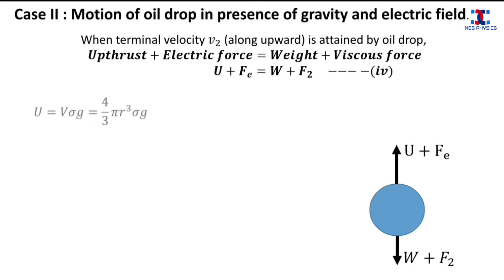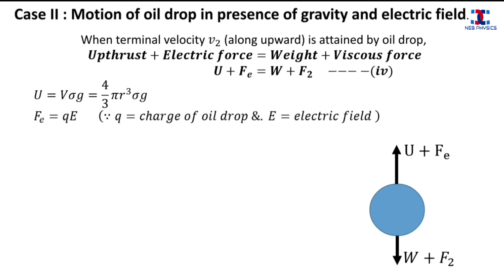We already know that the upthrust of air is (4/3)πr³σg, where σ is the density of air. The electric force Fe equals qE, where q is the charge of the oil drop and E is the applied electric field. The weight of the oil drop W equals (4/3)πr³ρg, where ρ is the density of oil. The viscous force F2 in this case is 6πηrv2, where v2 is the terminal velocity of the oil drop moving upward.